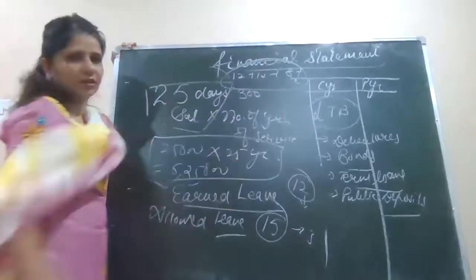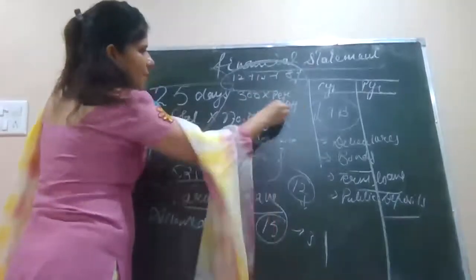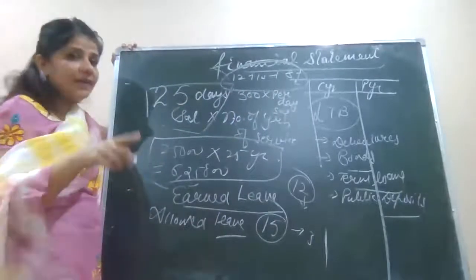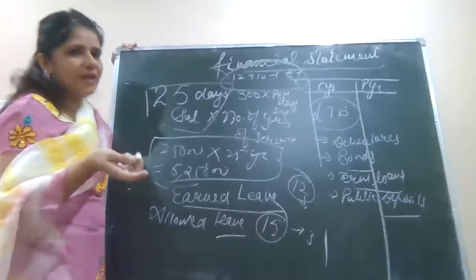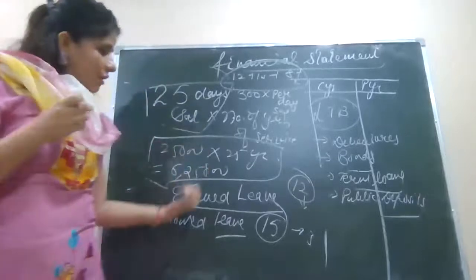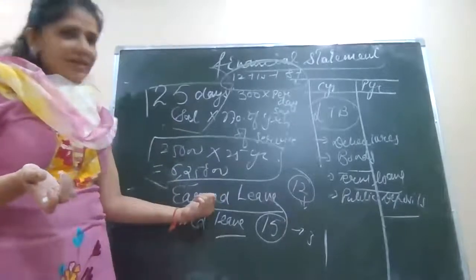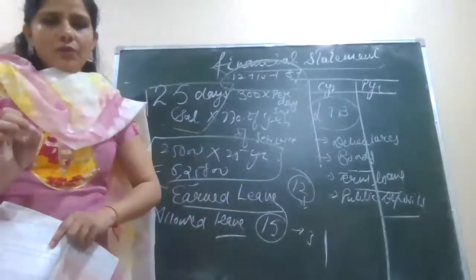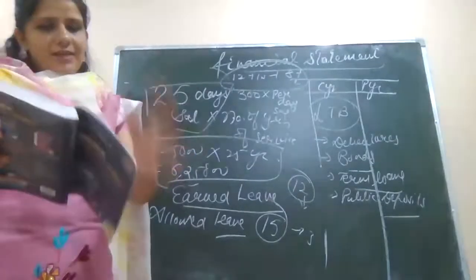For earned leave: whatever leave you have not availed — for example, if you accumulate 300 days of earned leave — that is multiplied by your per day salary. At the time of retirement, for example 300 days into two thousand per day salary. Companies need to make provisions for this too. Such provisions are long-term provisions — created for gratuity, warranty, and earned leave. Meanings are not part of your syllabus; you just need to know how these are shown in heads and subheads.